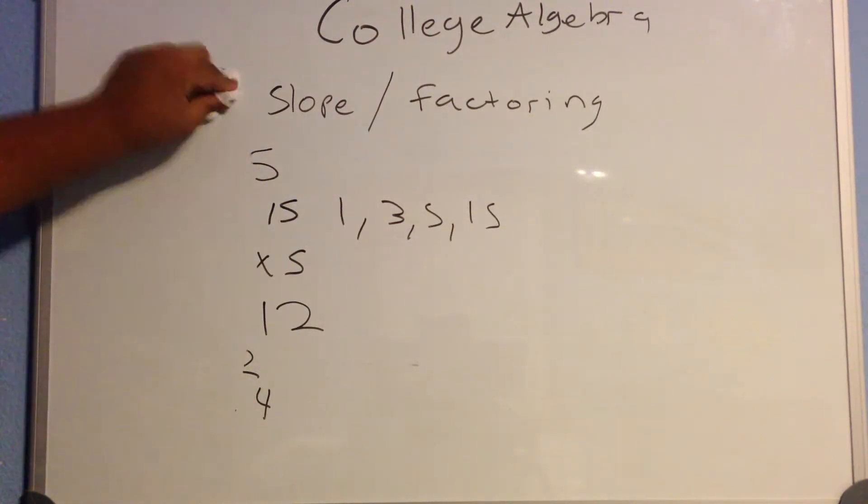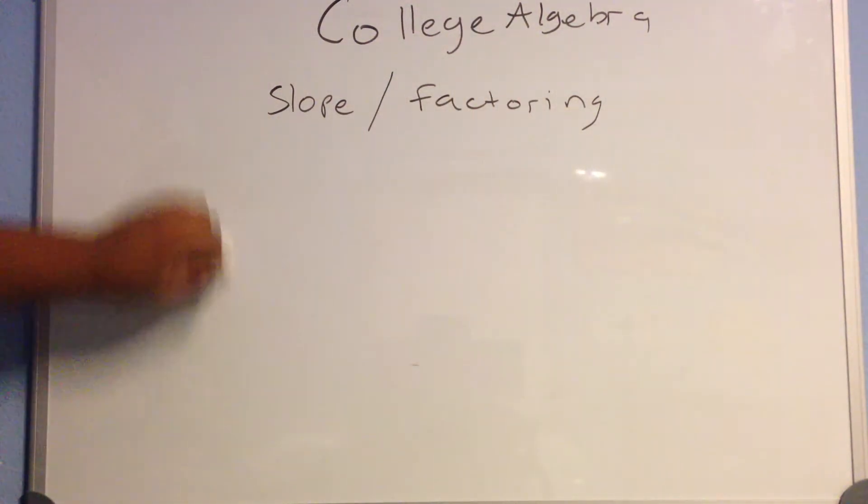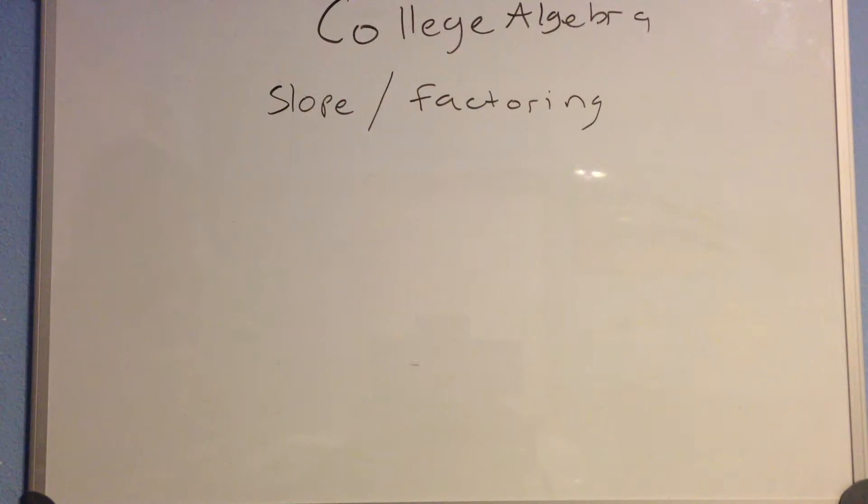There's also another important thing to discuss with factoring, and it is called prime factorization. It's essentially only the prime factors of that specific number.